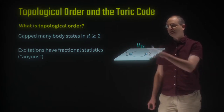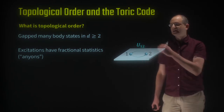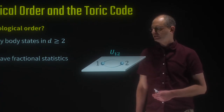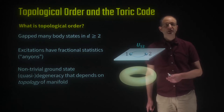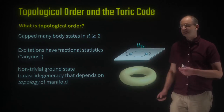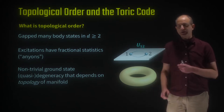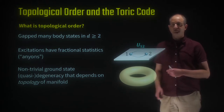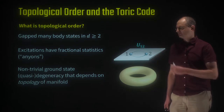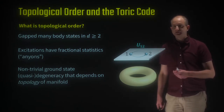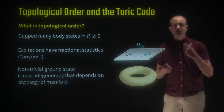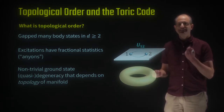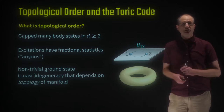There's another closely related property of topologically ordered states, which is the presence of a non-trivial ground state degeneracy that depends on the topology of the manifold that the system is placed on. For instance, if we use periodic boundary conditions — this is like placing our system on a torus — we'll find that rather than having a unique ground state, there are multiple degenerate ground states. Moreover, this ground state degeneracy is topological in the sense that there's no local operator or local measurement that can distinguish between the different states. So the many-body wave function actually senses the global topology of the system.